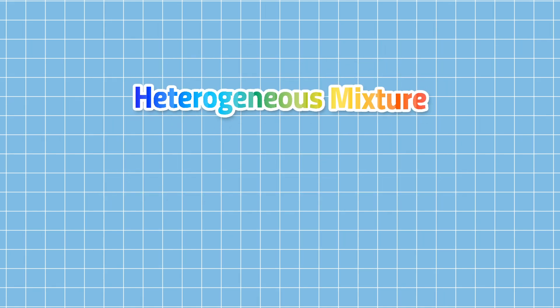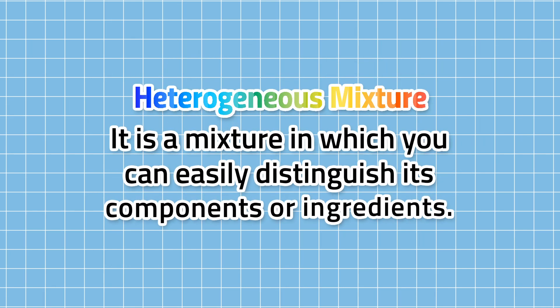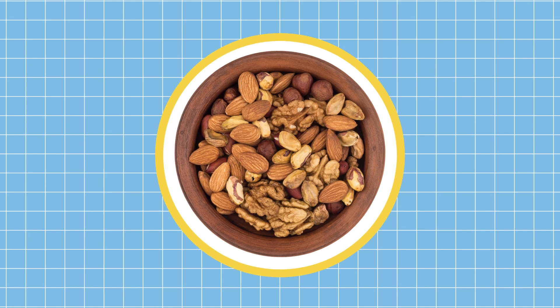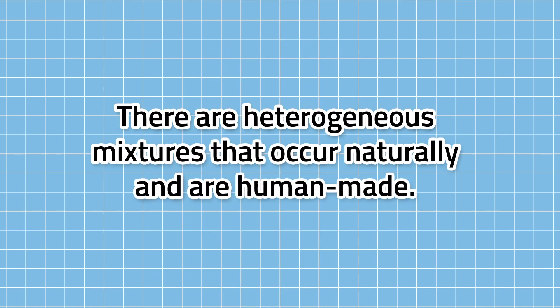Heterogeneous mixture. It is a mixture in which you can easily distinguish its components or ingredients. A mixture of nuts is an example of a heterogeneous mixture. Even if you mix it, you can still identify one component from another. There are heterogeneous mixtures that occur naturally and are human-made.